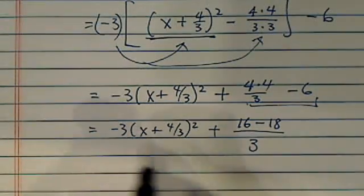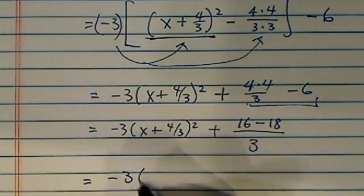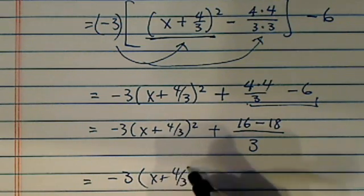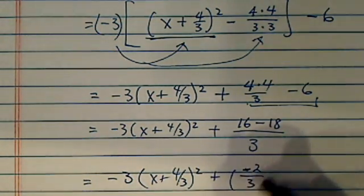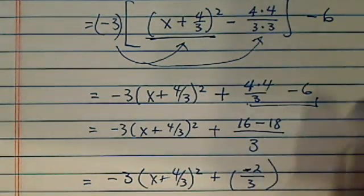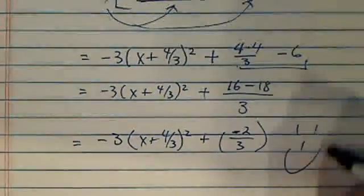One more step and then we're there. So the answer is minus 3, x plus 4 over 3 squared, plus, this is a negative actually, 2 over 3. So here's your answer. Have a confident day.